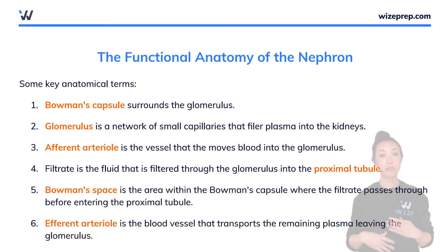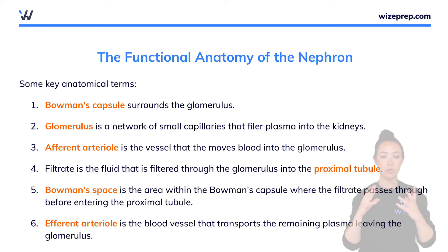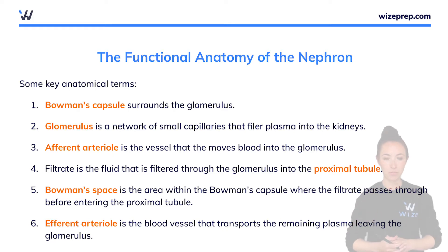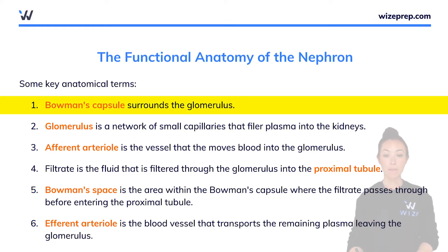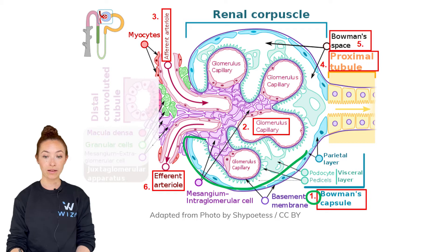I'm going to go through a list of terms and then go through the image as well to help you see what this looks like in the drawing and localize your understanding. The first part is Bowman's capsule — a capsule that surrounds the glomerulus. Bowman's capsule is this entire area that goes all the way around the glomerulus.